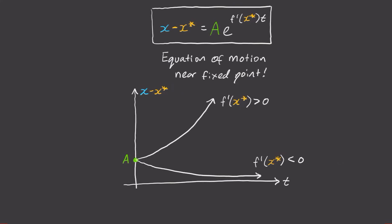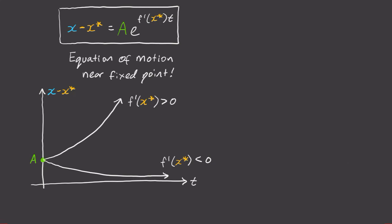This gives us information about the stability of our fixed point. Because if f dash of x star is greater than zero, then we can call this fixed point unstable. It's unstable because x minus x star, which is the distance from our fixed point, will grow exponentially fast. Meaning that if you started near your fixed point, you'll diverge away from that fixed point.